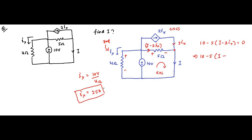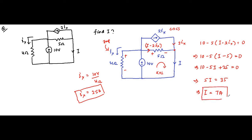Substituting ix equals 2.5, so 2ix equals 5. The equation becomes: 10 minus 5i plus 25 equals 0, which gives 5i equals 35, therefore i equals 35 divided by 5, that is equal to 7 ampere. So i equals 7 ampere, 2ix equals 5 ampere, and the remaining branch current is 7 minus 5 equals 2 ampere. Again, very basic understanding of Kirchhoff's laws — KVL and KCL — and the rest is just mathematical calculations.